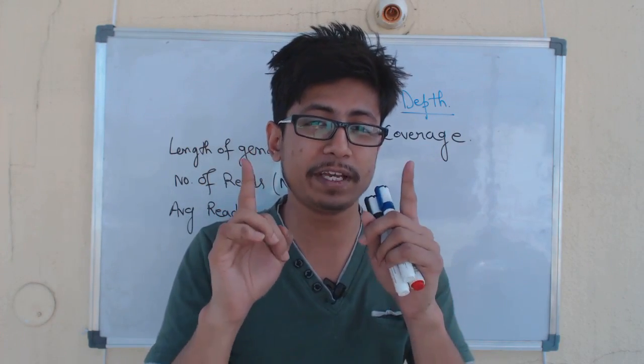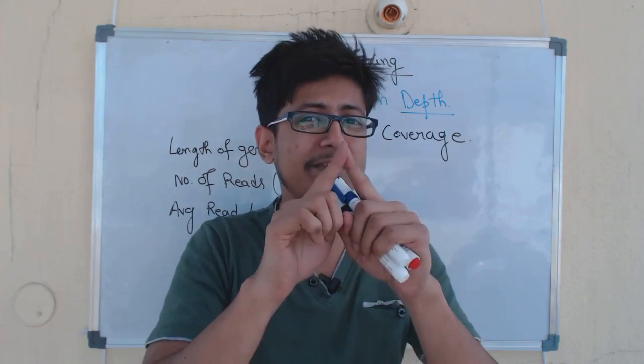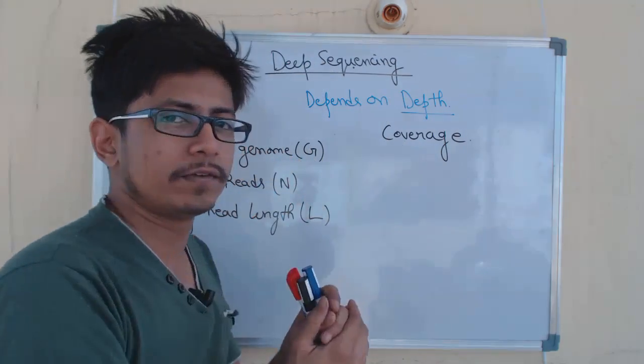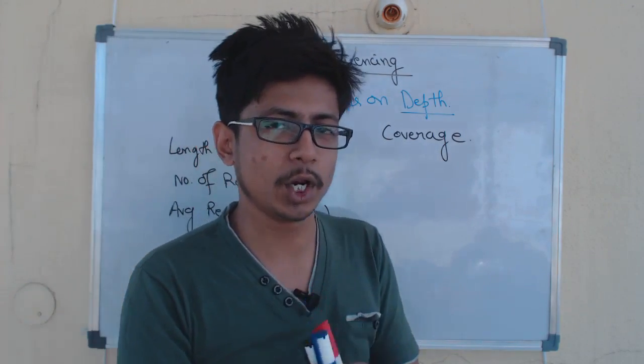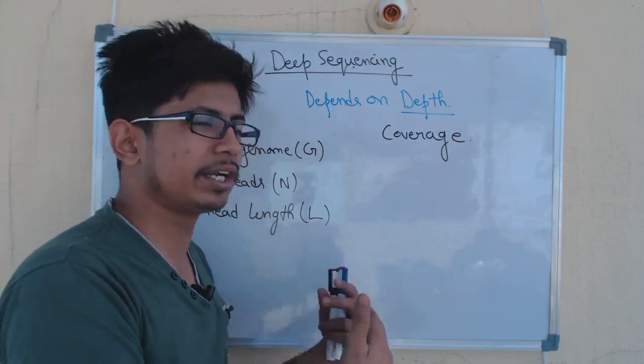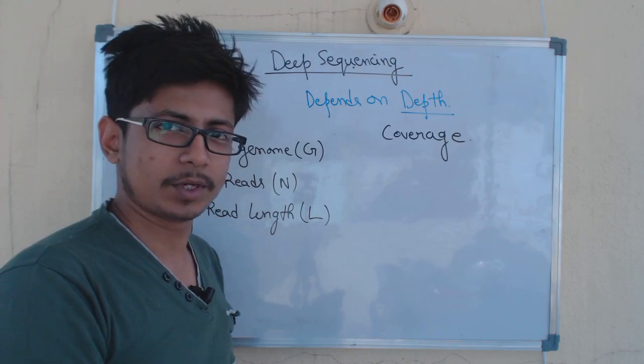Let's say you have a length of 200 base pairs long and you run this 200 base pair long DNA 300 times for sequencing.